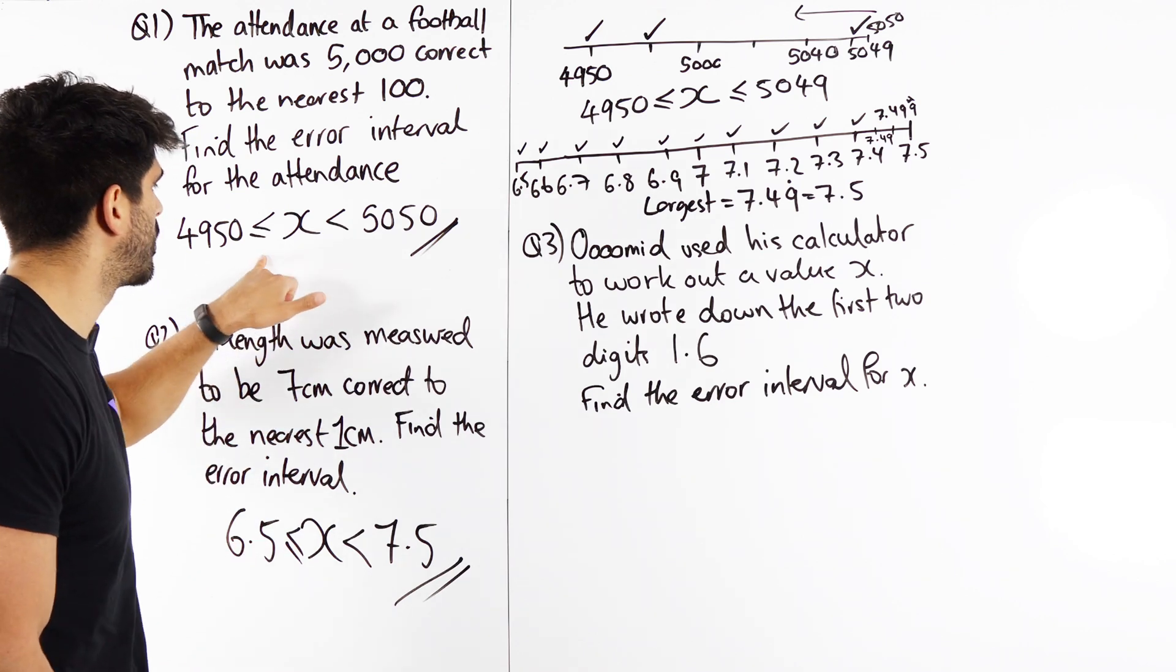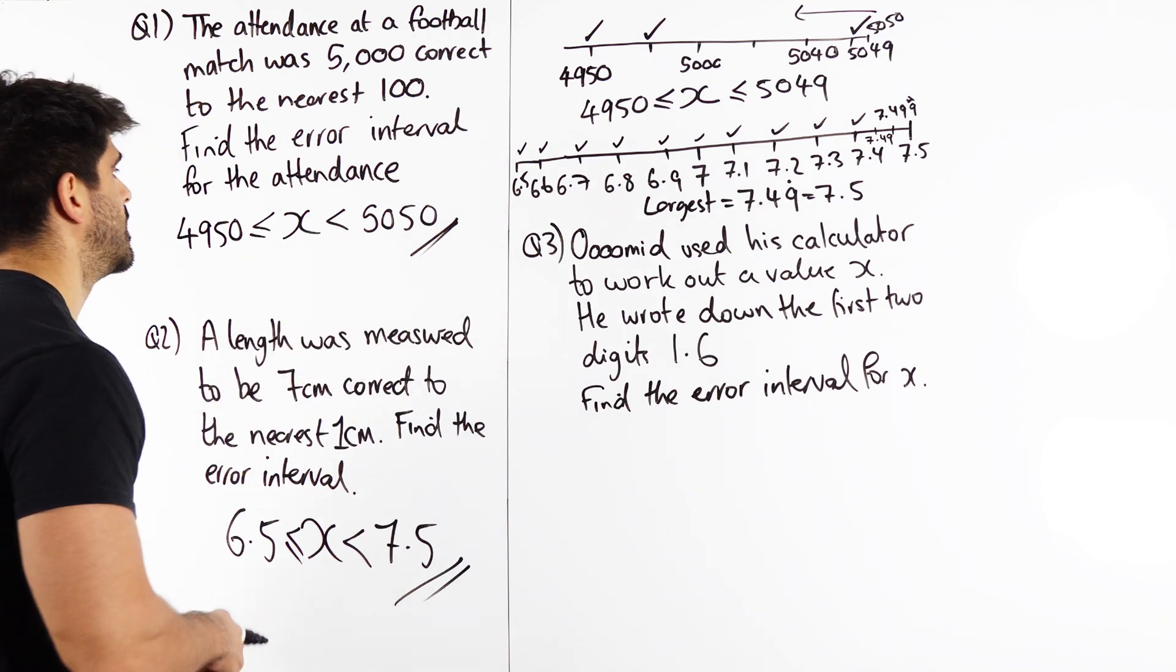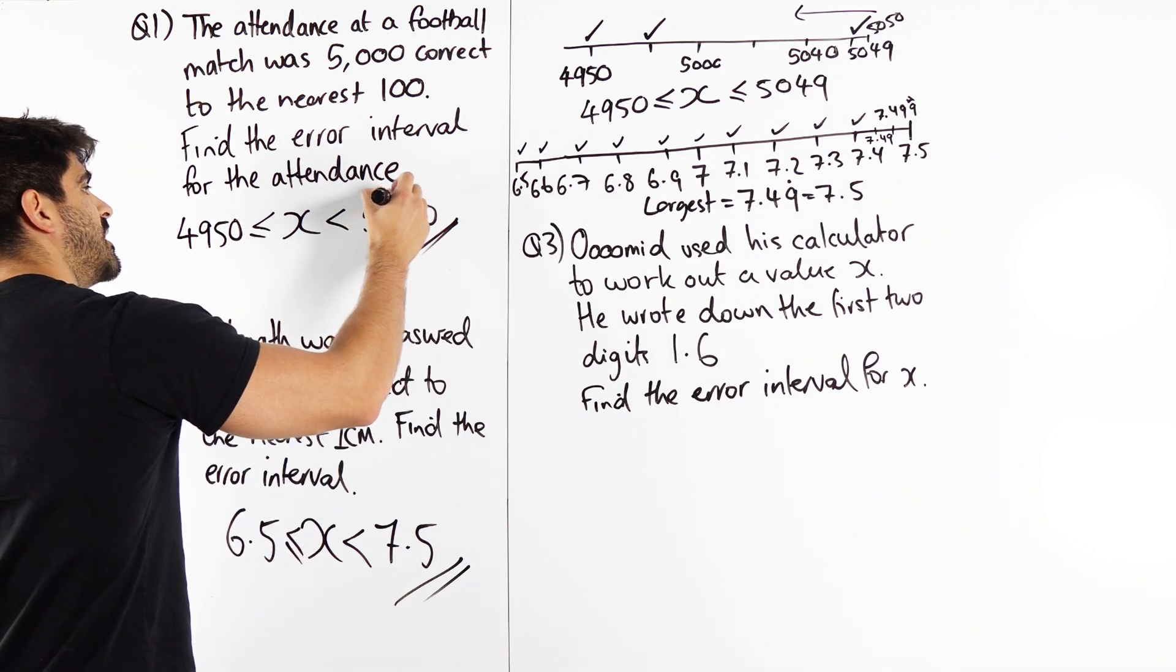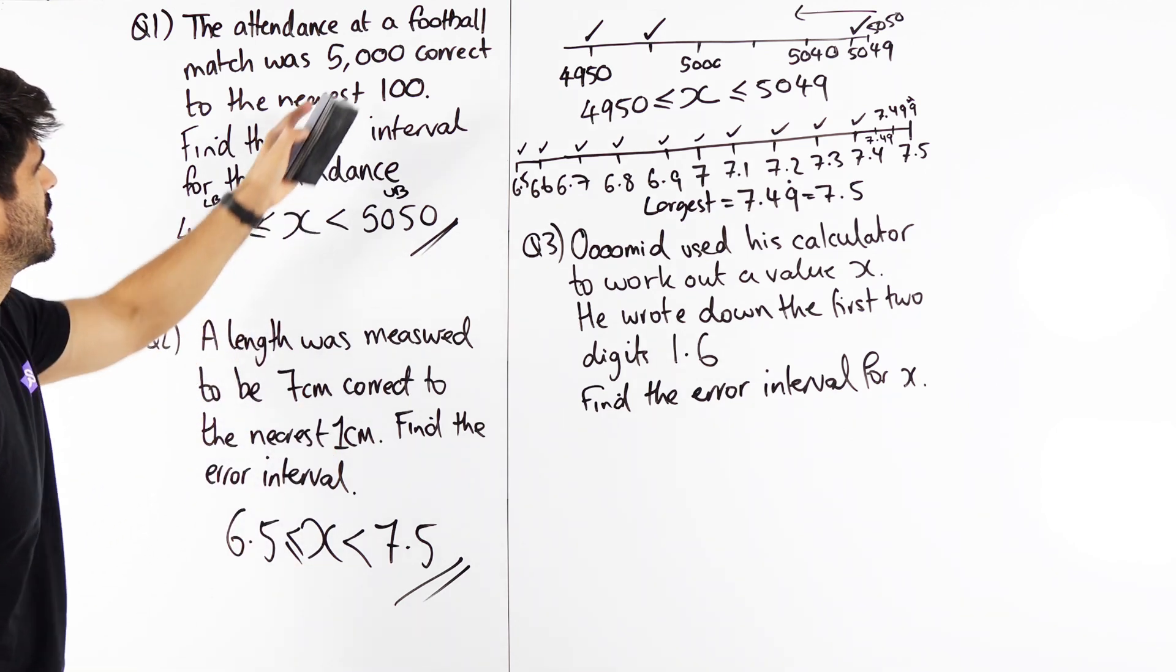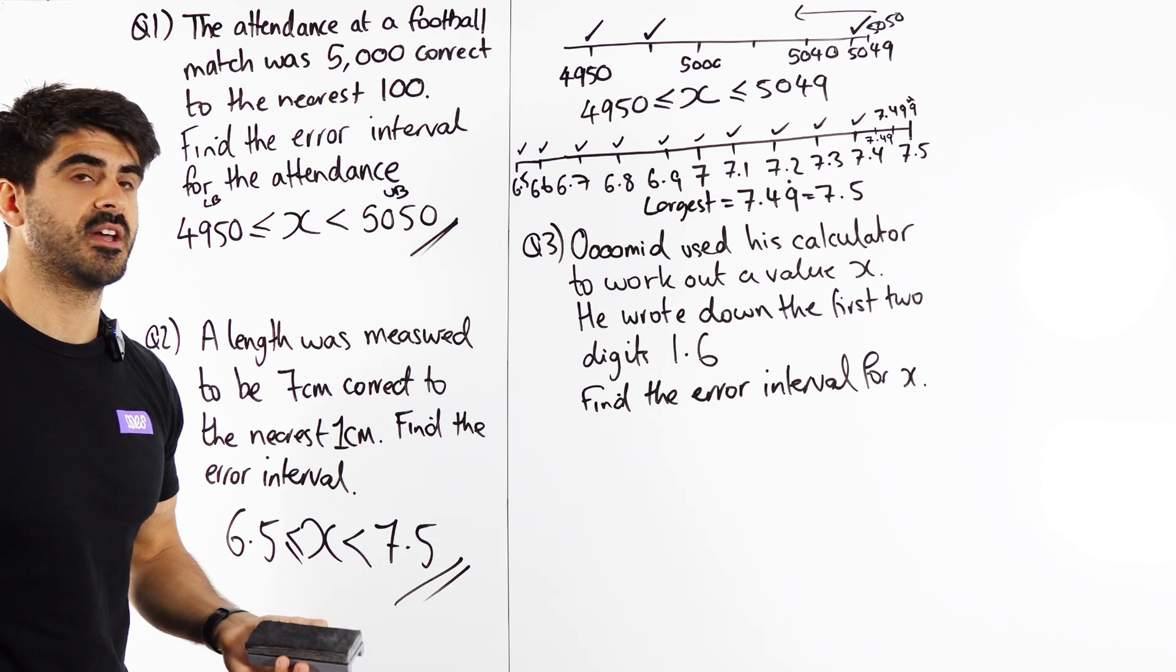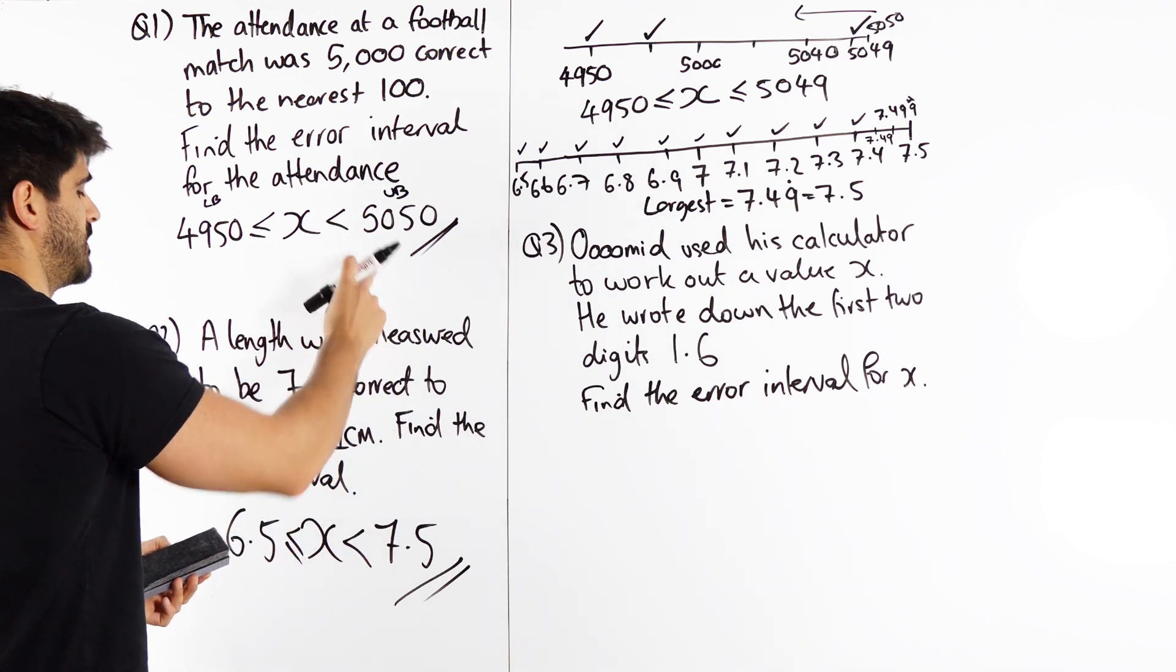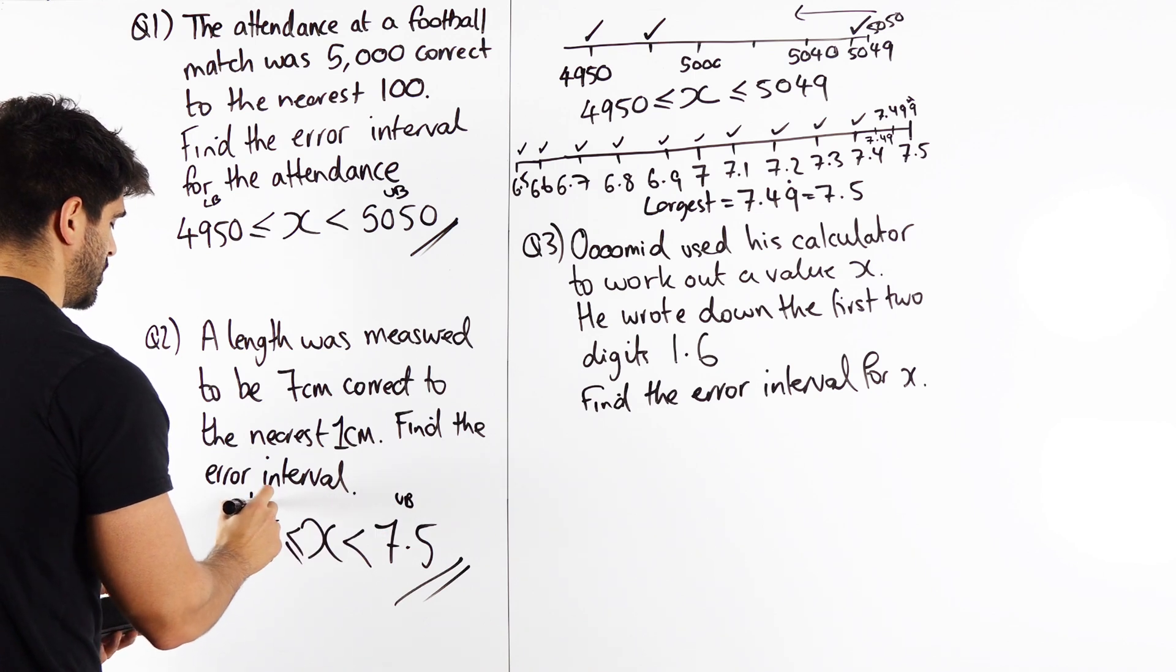But guys, you have to remember the form of the inequality, it can't equal the upper bound, all right? But that is your upper bound. So if they ask you for the upper bound, you need to say this and this is your lower bound. In fact, when it comes to the attendance, you would say 5049, you wouldn't say 5050, but in this context you would say your upper bound is that and that's your lower bound.